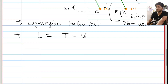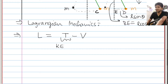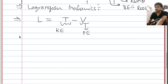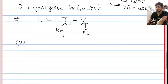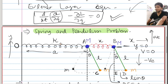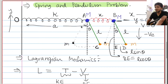Lagrangian is given by T minus V. T is your kinetic energy and V is your potential energy. So पहला काम अब हमें kinetic energy निकालनी है — सबसे पहले capital M की।